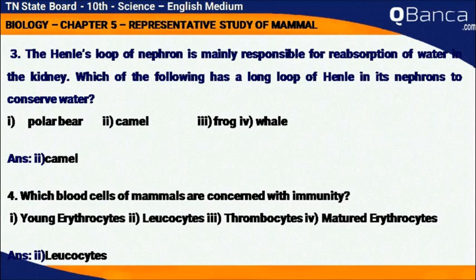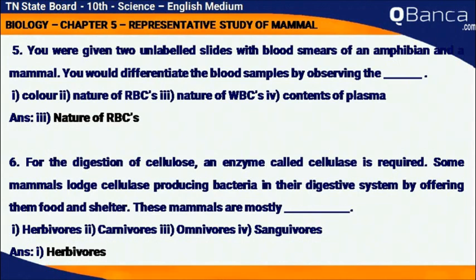Which blood cells of mammals are concerned with immunity? Leukocytes. You are given two unlabeled slides with blood smears of an amphibian and a mammal. You would differentiate the blood samples by observing the nature of RBC.